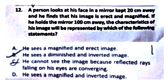Question 12: A person looks at his face in a mirror kept 27 cm away and finds his image is erect and magnified. If he holds the mirror 100 cm away, what will the characteristics of his image be? Options: A) Magnified and erect. B) Diminished and inverted. C) Can't see because reflected rays are converging. D) Magnified and inverted. When the mirror is farther away, the image becomes inverted and diminished — so the right answer is Option B.